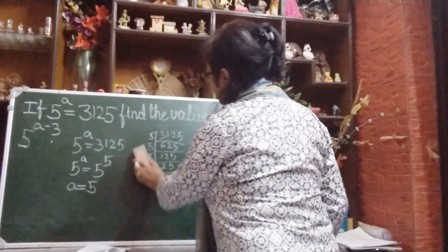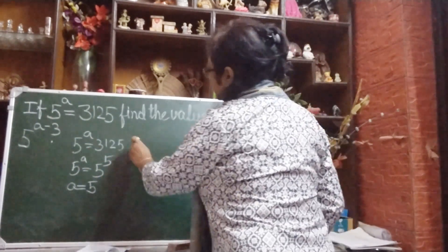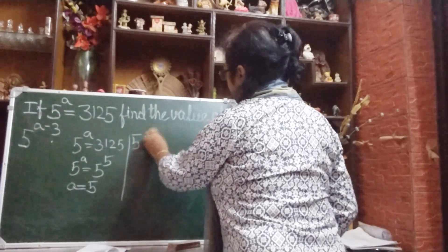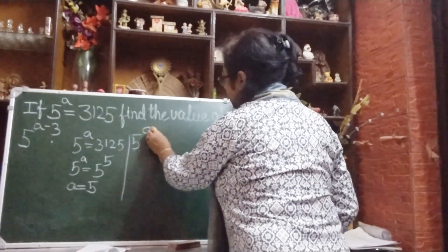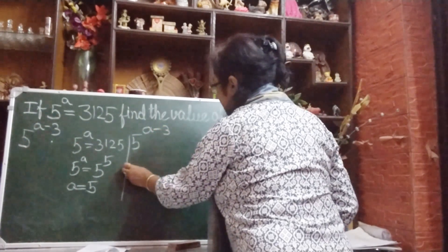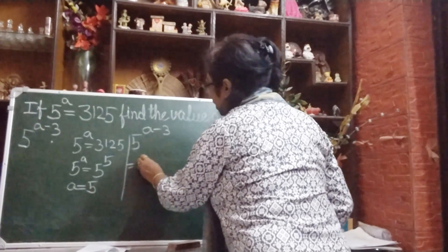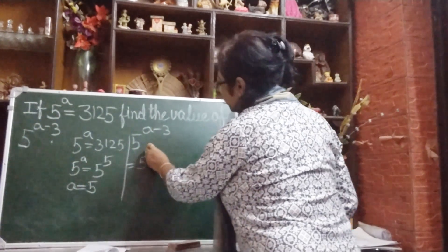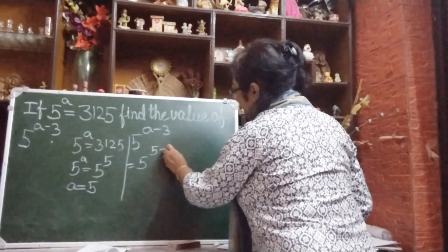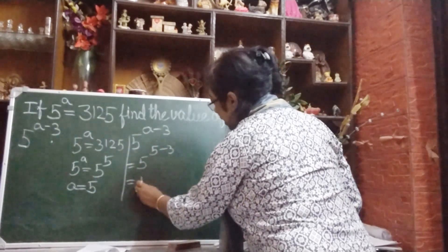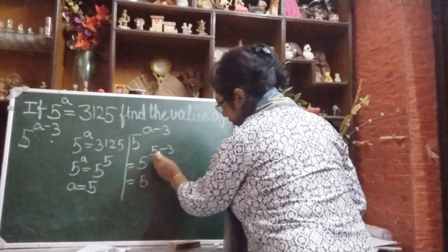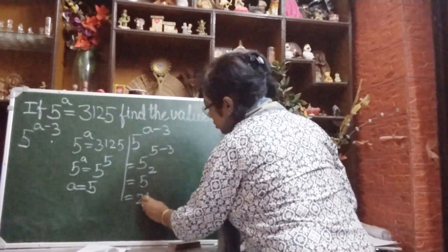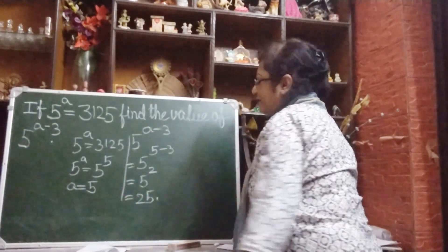So very simply, we have to find the value of 5 to the power a minus 3. We will put the value of a, which is 5, so we get 5 to the power 5 minus 3. That gives 5 to the power 2, and 5 squared equals 25.